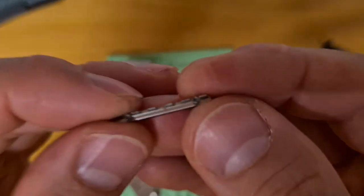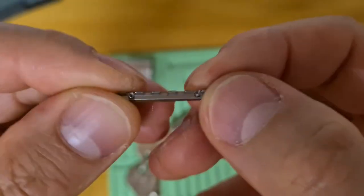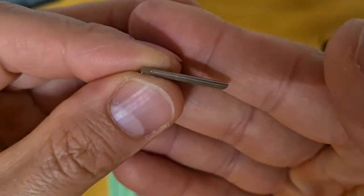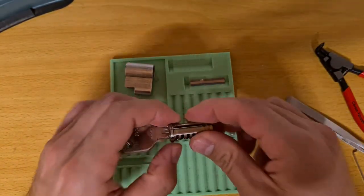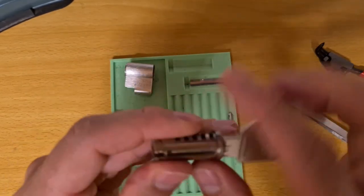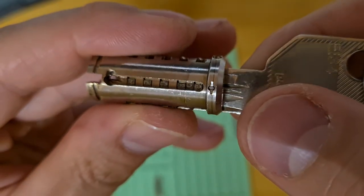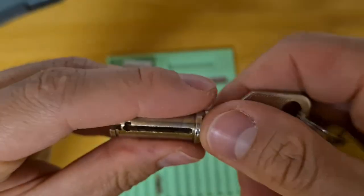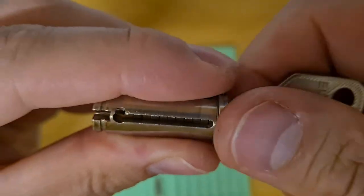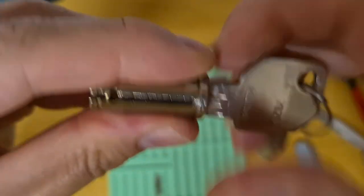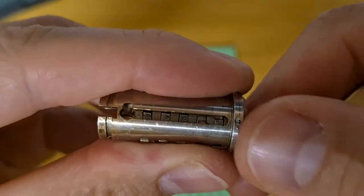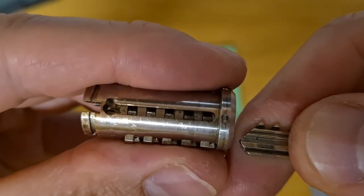So here is the sidebar and the springs. And there are the sliders you see now they're all aligned. And if I remove the key, they are now all over the place and the sidebar would not be able to retract.